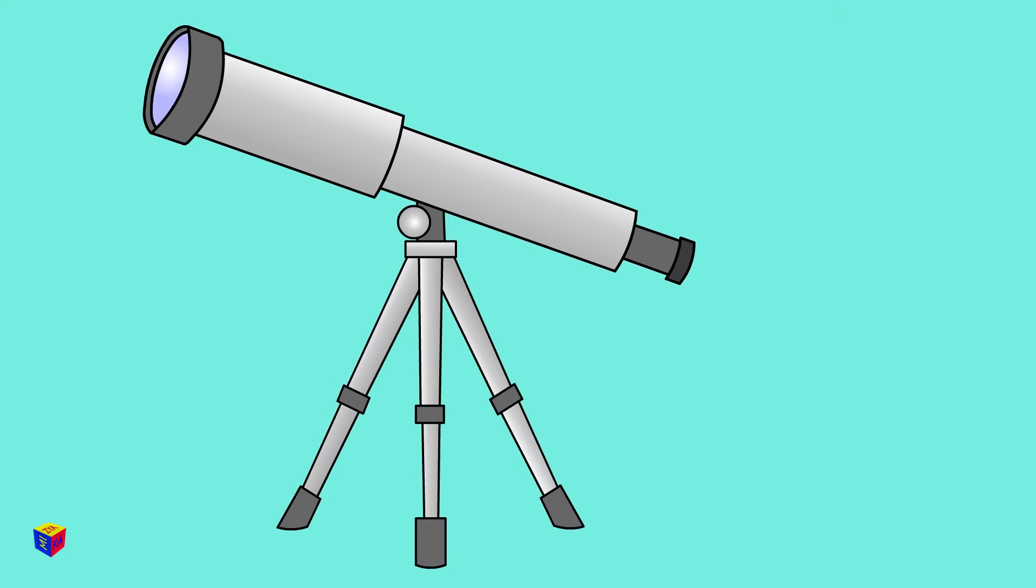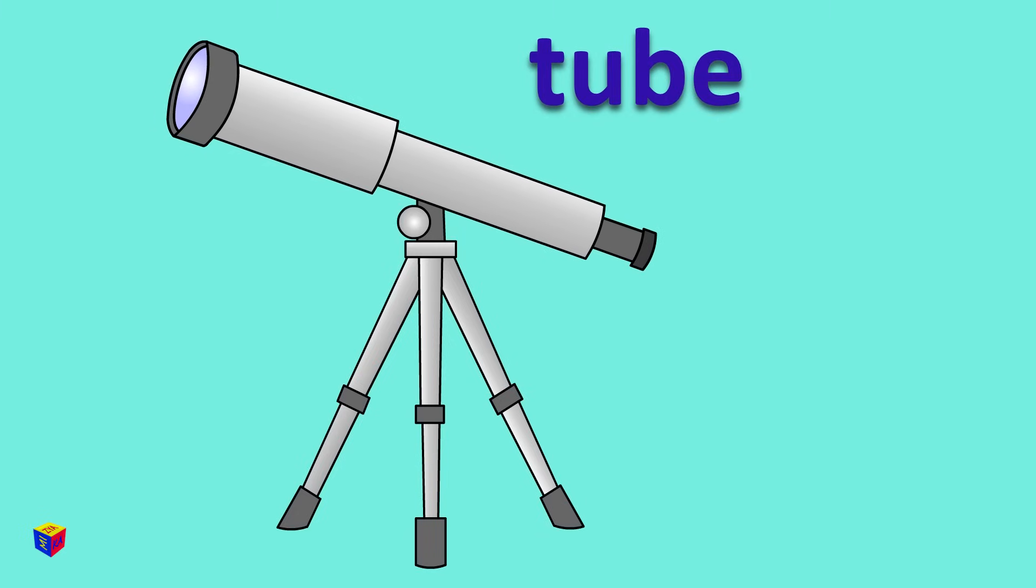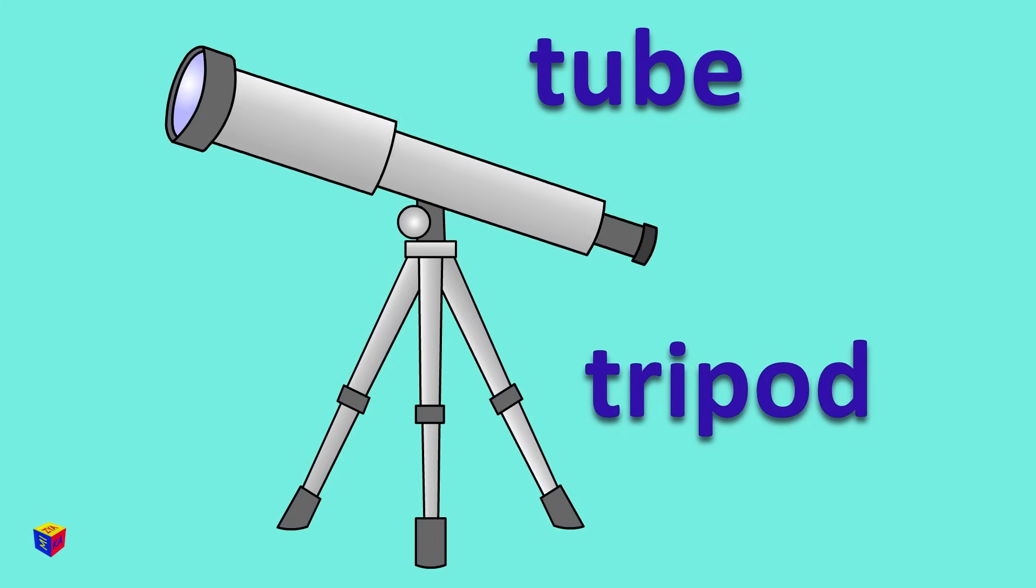The telescope consists of a tube which is mounted on a tripod stand that can be tilted and turned to look at different areas of the sky.